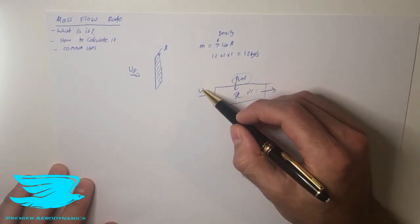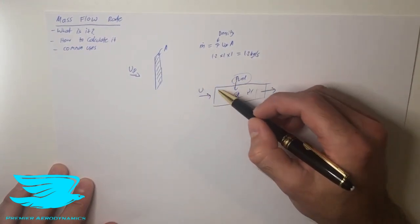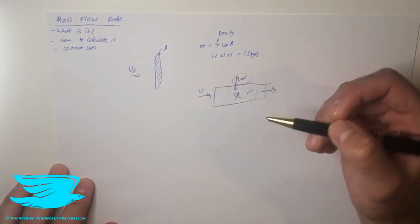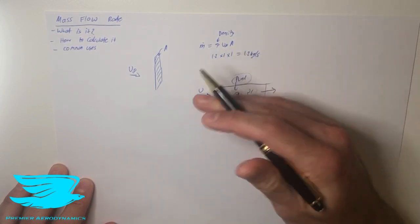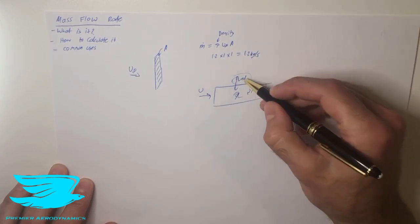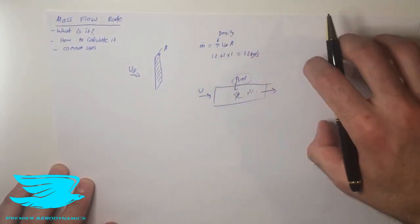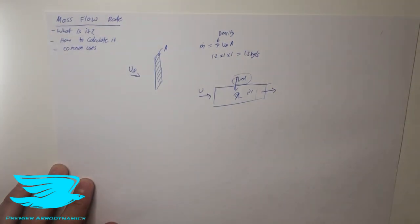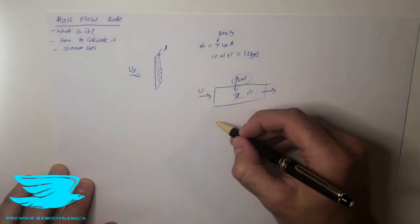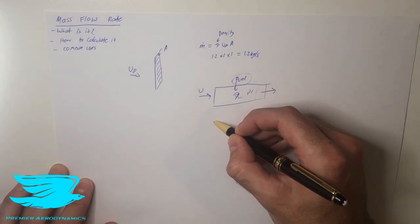By knowing what the velocity is coming in, the area of whatever point you need and the density of the air or the fluid, you can then determine how much fuel you should be dumping in for the stoichiometric ratio you need.